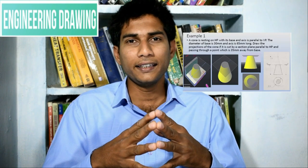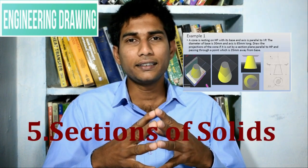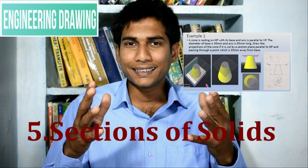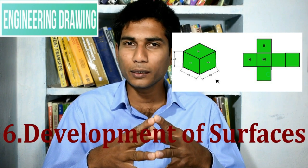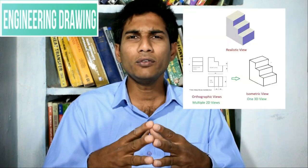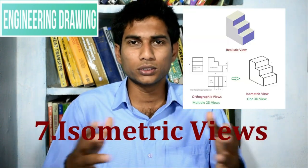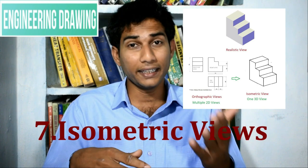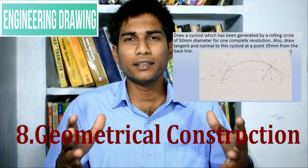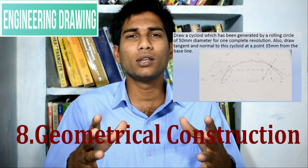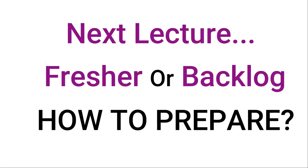In section five, I will introduce section of solids. In section six, we will cover development of surfaces. In section seven, we will deal with isometric views. In the last section, section eight, we will do important geometric figures and conics — for example, hyperbola, parabola, ellipse, involutes, etc. So we have covered each and everything.